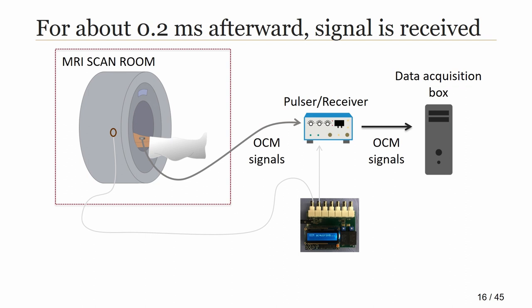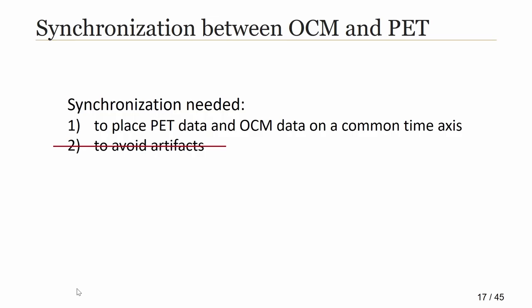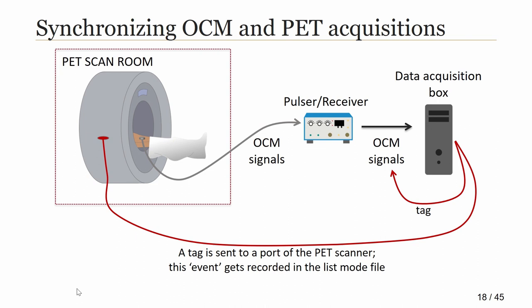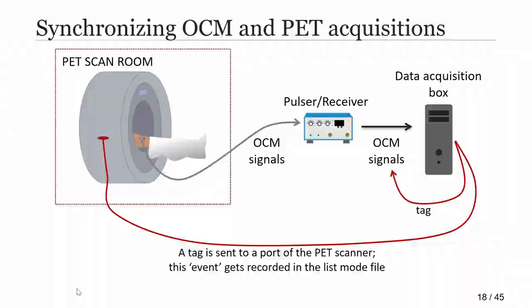In one application we use OCM sensors with PET instead of MRI. Synchronizing PET and OCM acquisition is actually easier, because there's no artifact issue — firing the sensor during data acquisition does not create artifacts in PET. The goal of synchronization in this case is simply to put PET and OCM data on the same time axis. This is done by having the data acquisition system stamp markers simultaneously on both the OCM data stream and the PET data stream, recorded as events in the raw PET data file, called the listmode.